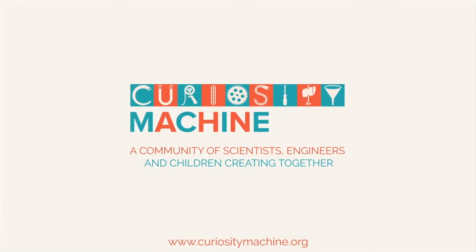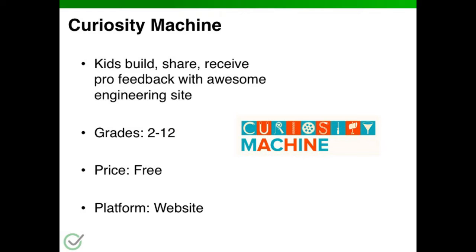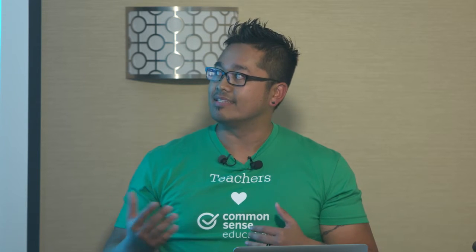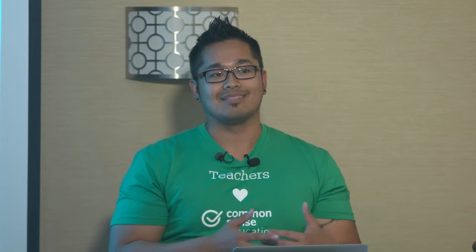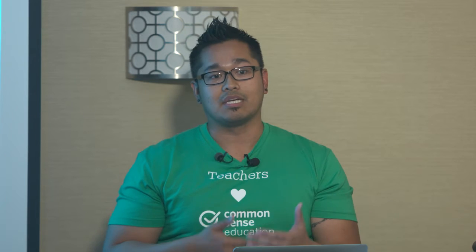First up is Curiosity Machine. It's a really great engineering site that allows kids to build, share, and receive professional feedback, with great connections to actual engineers and scientists. It is rated for grades 2 through 12, it is free, and it is web-based, so as long as you have any kind of web platform you can access the tool. These tools support next generation science standards not by fulfilling every standard, but by allowing kids to deepen and engage the way they apply knowledge and build a bigger love for how they apply these types of ideas.